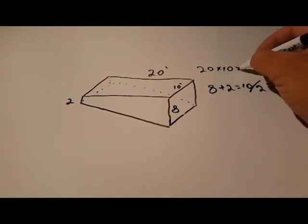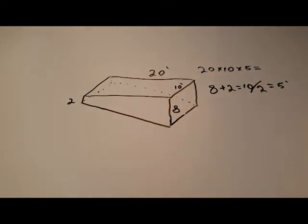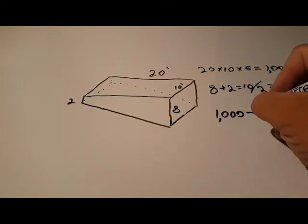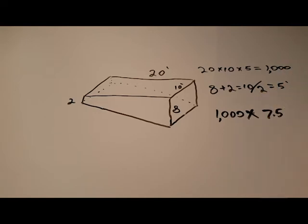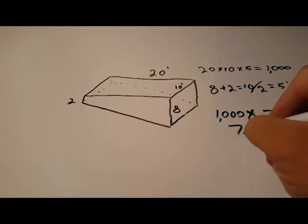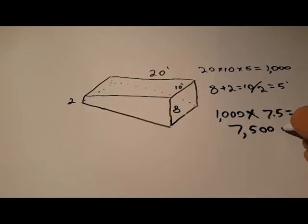So we'll multiply that into our equation here, and that's going to be 1,000. And we're going to go ahead and multiply our 1,000 by 7.5 to get our gallons, which is 7,500 gallons for our sloped rectangular swimming pool.